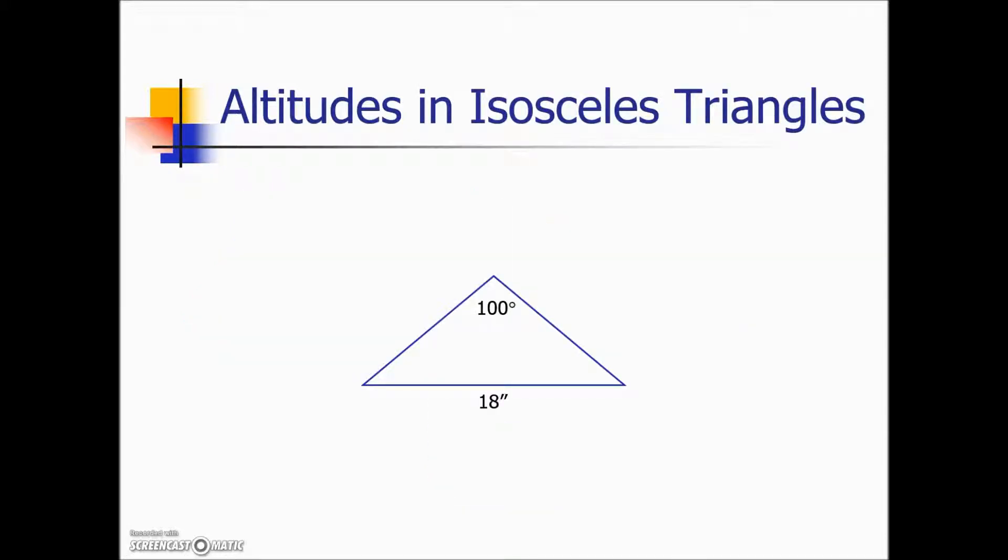Having an altitude drawn in an isosceles, and an equilateral triangle for that matter, have some interesting and useful properties. So here we've drawn an altitude. What it does is it bisects or cuts in half the vertex angle. It originally was 100, we now have each of these two parts are 50 degrees.